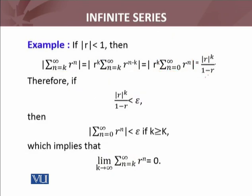Therefore, if epsilon is arbitrary greater than zero, we have to find out |r|^k / (1-r) less than epsilon. Since |r| is less than 1, then summation n equals zero to infinity r^n is less than epsilon at n equals k, if k is greater than or equal to capital K.